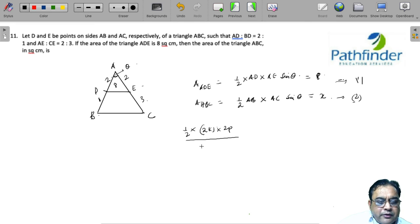Sin theta cancels out, then divided by 1/2 × AB. AB will be equal to 2 + 1 = 3k, multiplied by AC. AC is equal to 2 + 3 = 5p, and this must be equal to 8/x. So halves cancel, k cancels, p cancels.